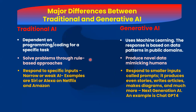If we compare Traditional and Generative AI, the three major differences are: 1. Traditional AI depends on programming, also known as coding, for a specific task. In Generative AI, there is an element of machine learning — the response is based on data patterns in public domains.